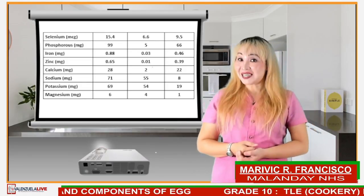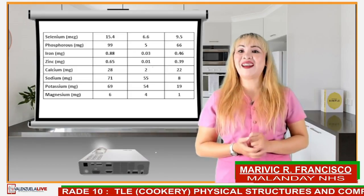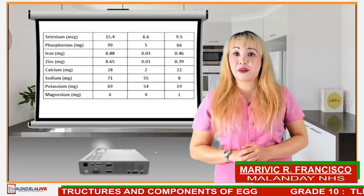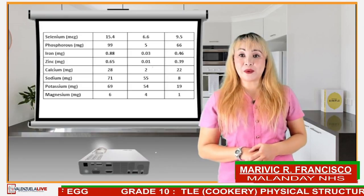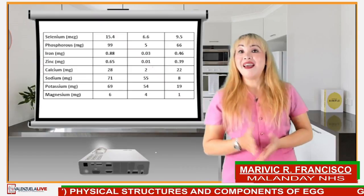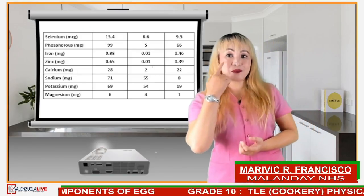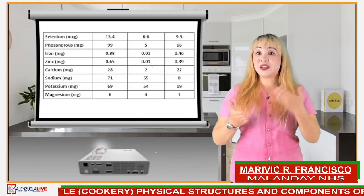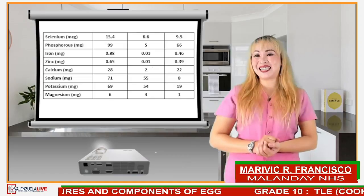Vitamin B12 also helps prevent a type of anemia called megaloblastic anemia that makes people tired and weak. Folate is one of the B vitamins needed to make red and white blood cells in the bone marrow, convert carbohydrates into energy, and produce DNA and RNA. Adequate folate intake is extremely important during periods of rapid growth such as pregnancy, infancy, and adolescence. Vitamin D plays a significant role in the regulation of calcium and maintenance of phosphorus levels in the blood — these factors are vital for maintaining healthy bones. We have also vitamin A.